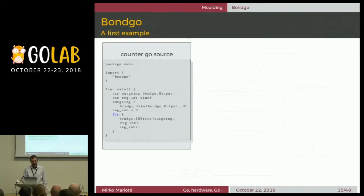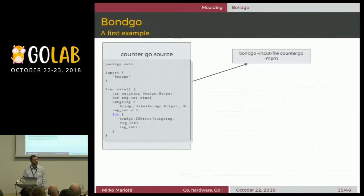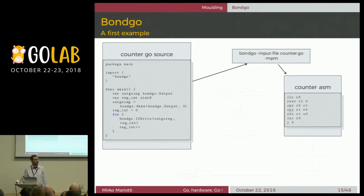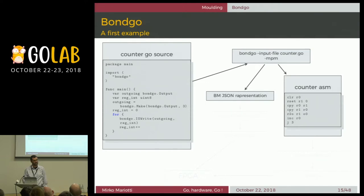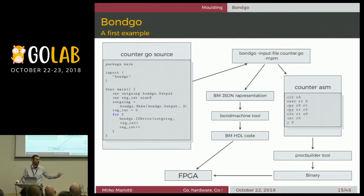Here's a real example. This code is a single function with a variable — just a counter that increases the variable forever. With the 'make' line, we tell the system that this object has an output that will be mapped to a physical output somewhere. We run the compiler; the compiler creates the assembly — a completely custom assembly you can't see anywhere else — and creates a JSON representation of the machine. The JSON representation is translated into HDL code, the HDL code is put on an FPGA, and with another tool we create the binary and run it on the FPGA.